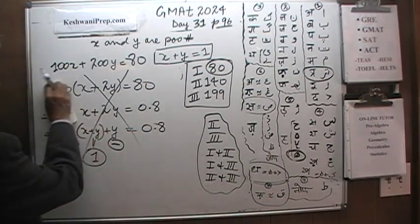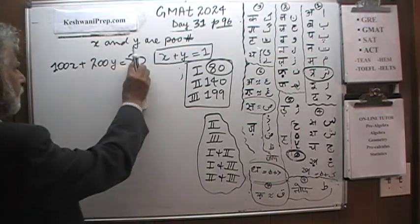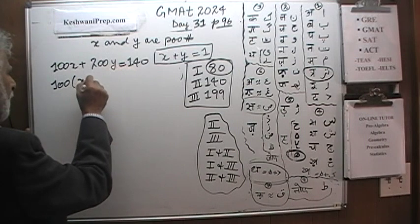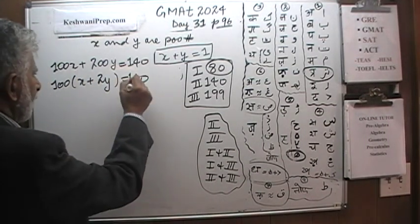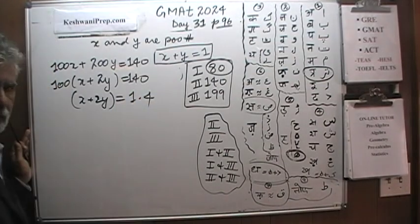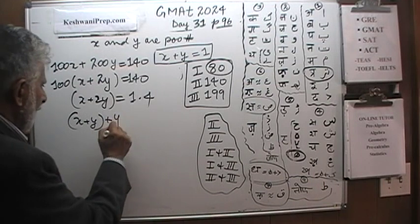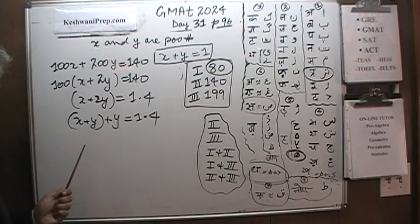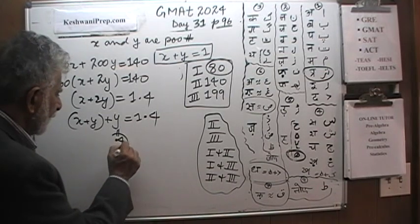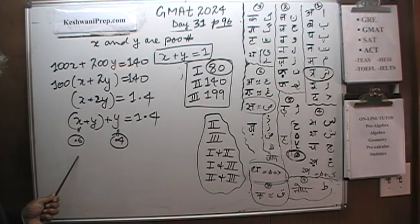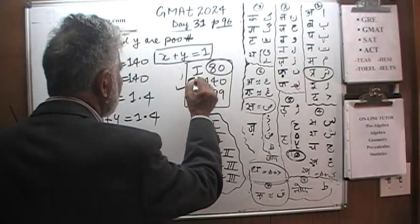Let's try 140. Same routine — take out 100 common, divide both sides by 100, and X plus 2Y would have to equal 1.4. We have X plus Y plus Y, and the question is: can this be 1.4? The answer is why not. In order for that to be true, Y would have to be 0.4, and X would be 0.6. Both are positive, so this is possible. Number 2 is possible; number 1 was not.